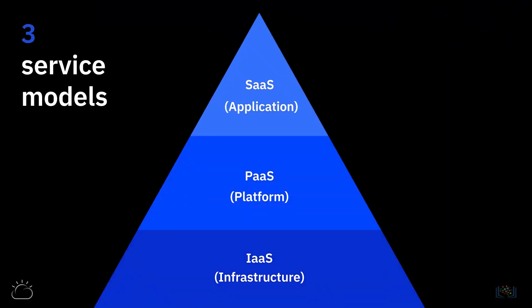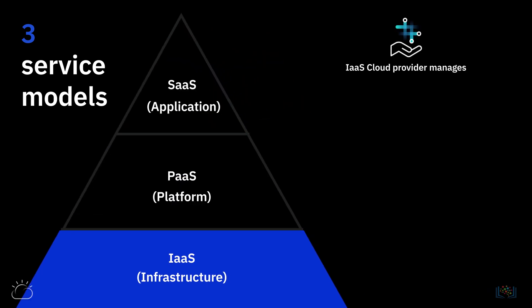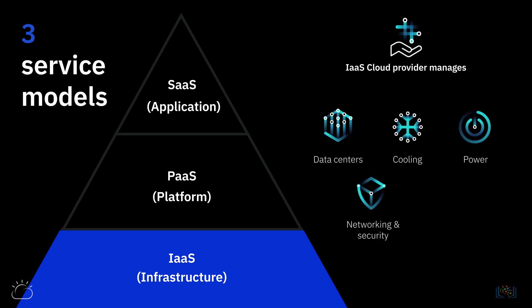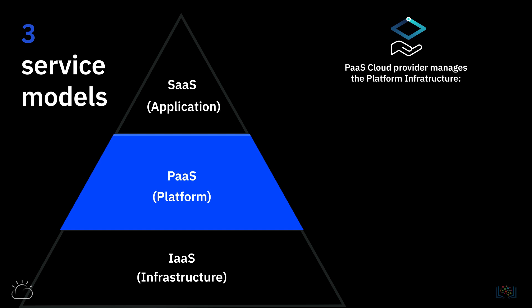So let's see what this means in terms of cloud computing and its three service models. With IaaS, the cloud provider manages the physical resources — data centers, cooling, power, network, and security — as well as computing resources that include servers and storage. With PaaS, the provider additionally manages the platform infrastructure, which includes operating systems, development tools, databases, and business analytics.